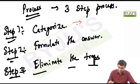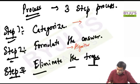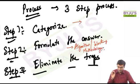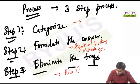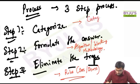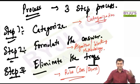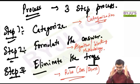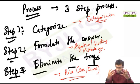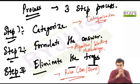For every category, I am going to give you an algorithm or a working methodology to answer the question — a specific algorithm for each category. And then, to eliminate the traps, we will use the rules. The rules are basically the do's and don'ts. So for any RC question, you are going to follow this three-step process: first, categorize using the categorization principles I will teach you; step two, formulate the answer using the algorithm for that category; step three, eliminate the traps using the rules.